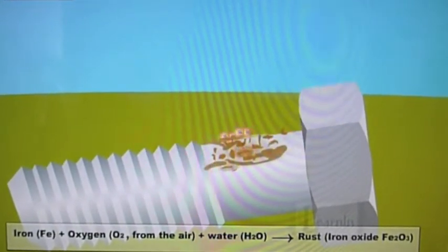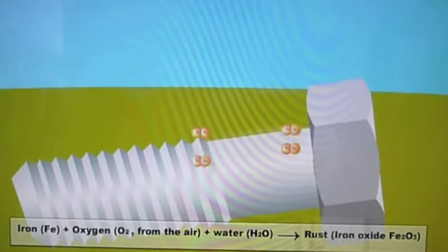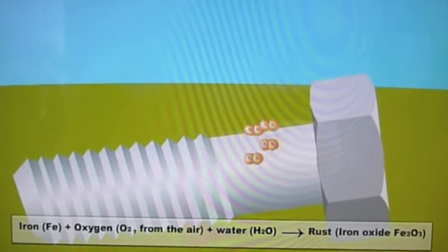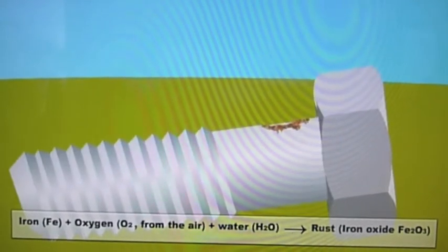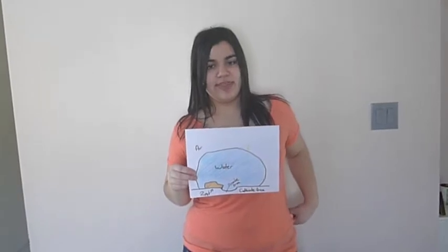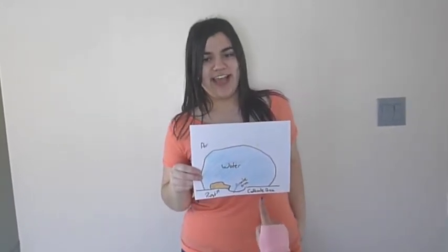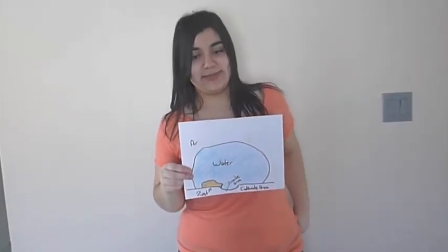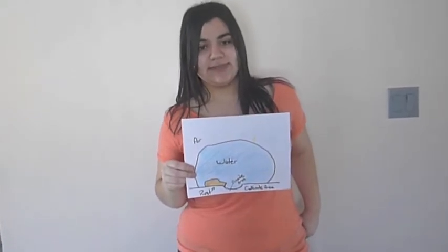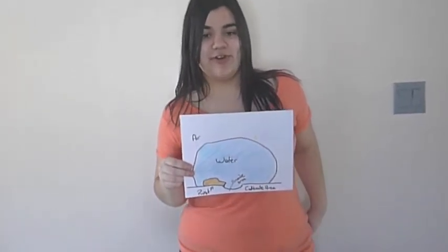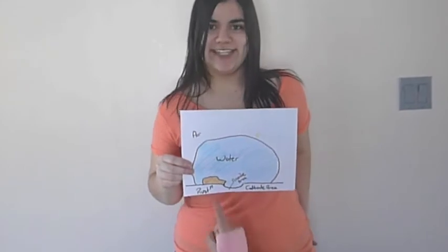When iron corrodes, the electrolyte provides an anode with oxygen. As the oxygen combines with the metal, the electrons are set free. They then flow through the electrolyte to the cathode, and the metal of the anode disappears. This causes it to be swept away by the electrical flow, converting it into rust.